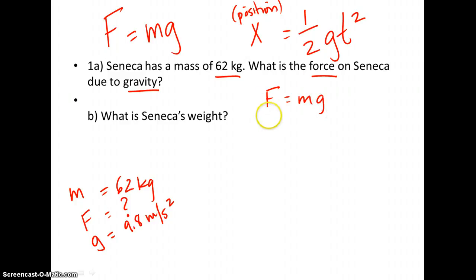So my force is unknown. My mass, I do know, is 62 kilograms times my g acceleration or gravitational acceleration, which is 9.8 meters per second squared. And I get a number that is 607.6 newtons if I do that. So that is the force that is on Seneca due to gravity.